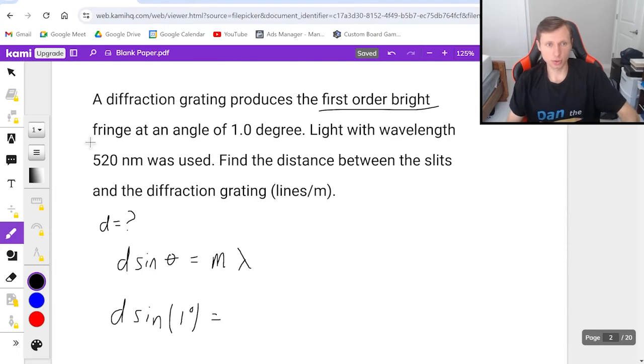M is the number of bright fringes. Since it says the first order bright fringe, that's going to be m equals 1. And finally, lambda, the wavelength, that's 520 nanometers.